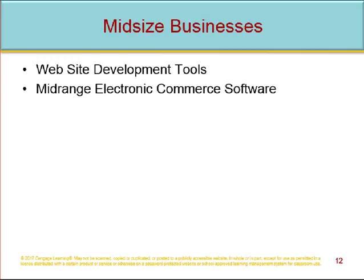Mid-size businesses: mid-range electronic commerce software costs between $5,000 and $200,000. Operating costs are between $1,000 and $30,000 annually. They offer connectivity to database or ERP systems that store inventory information. InterShop offers mid-range packages that include search and catalog capabilities, electronic shopping carts, credit card processing, and connection to back-end businesses and databases. Setup wizards, catalog tools, data management functions, and built-in templates are included, and they manage storefronts with web browser interfaces.